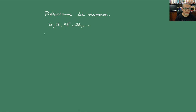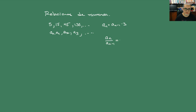Observemos que si llamamos a estos términos A₀, A₁, A₂, A₃, etc., lo que vamos a tener en general es que Aₙ va a ser Aₙ₋₁ por 3. Y por lo mismo, si hacemos Aₙ sobre Aₙ₋₁, eso es siempre igual a 3. Cuando tenemos una cosa de este estilo, es decir, cuando la razón de un término entre el término inmediato anterior es una constante, vamos a decir que esta es una sucesión geométrica.